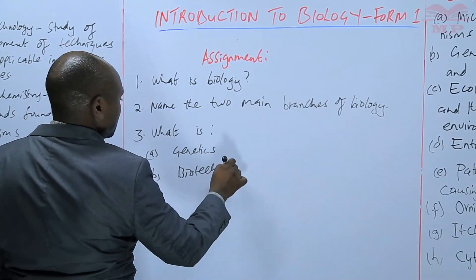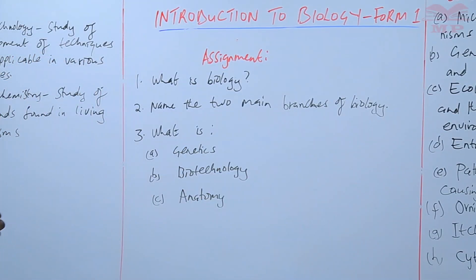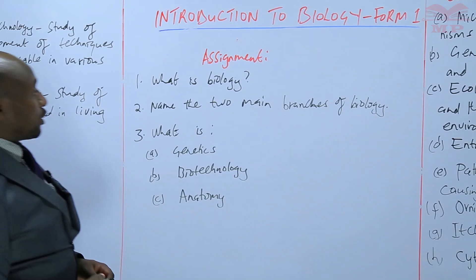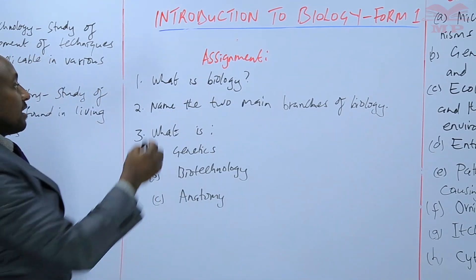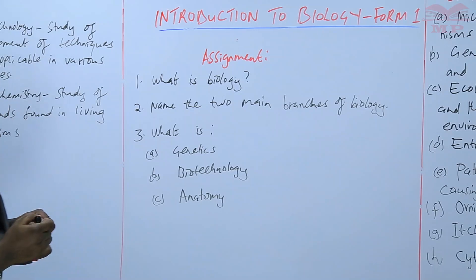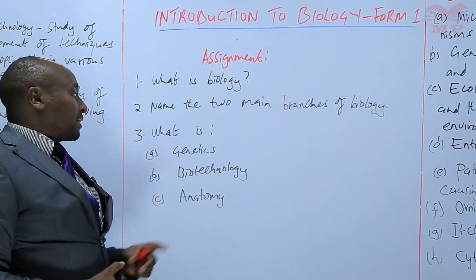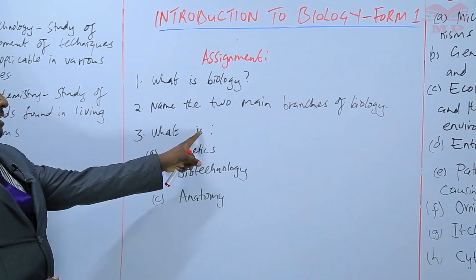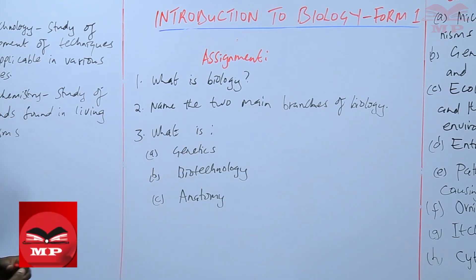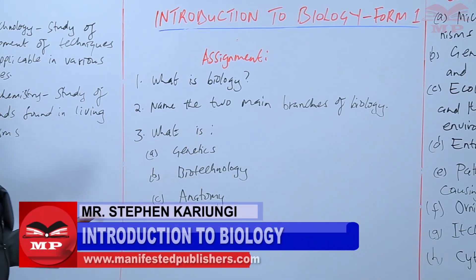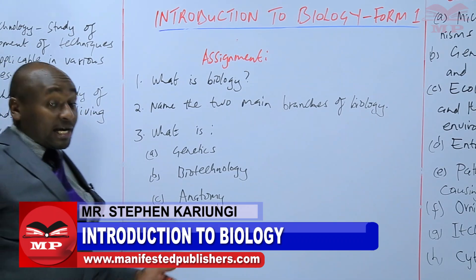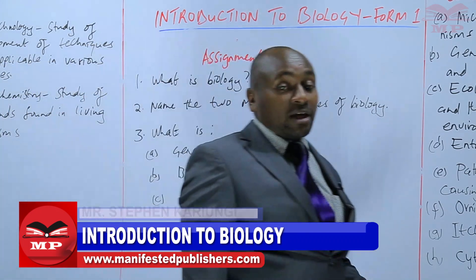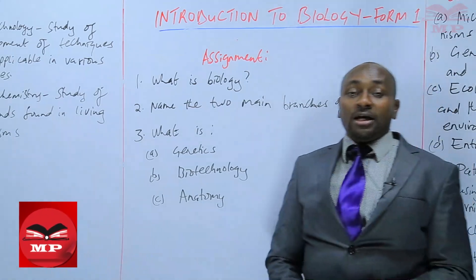We are going to have a short assignment. The first question: what is biology? You will get that from what we have covered today. Name the two main branches of biology. What is genetics? What is biotechnology? And what is anatomy? We are going to stop there for today and will continue from there next time.